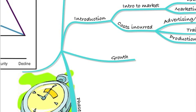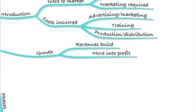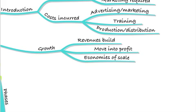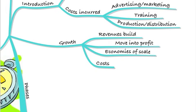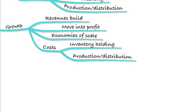We then move into the growth phase. During this phase, our revenues will begin to build, and we should see the product move into profit. We'll also start to see economies of scale — our cost per unit of production should decrease, because the more we produce, the lower we can get the price. We can take advantage of bulk discounts to buy raw materials cheaper. The costs we'll be incurring during the growth phase include inventory holding costs, as well as production and distribution costs continuing from the introduction phase.